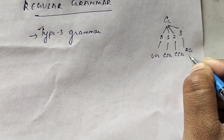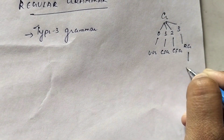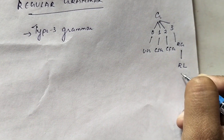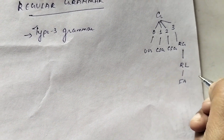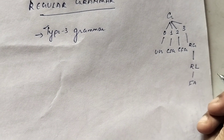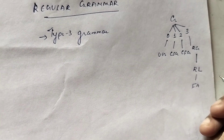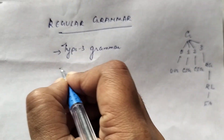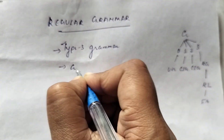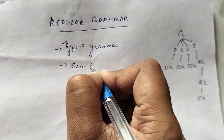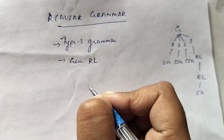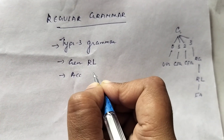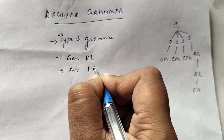Type 3 grammars are the grammars which generate all the regular languages and are accepted by finite automata, as you studied in previous classes. So regular grammar generates regular languages and is accepted by finite automata.